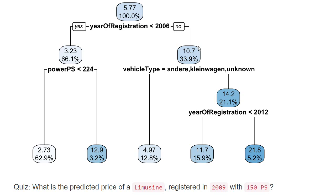You could also, for example, if you only know that a car was registered in 2008 but don't know anything about the vehicle type, we could go directly to the corresponding leaf. We would then predict a price of 10,700 euros, and 33.9% of our observations in the training data set are registered in 2006 or later.